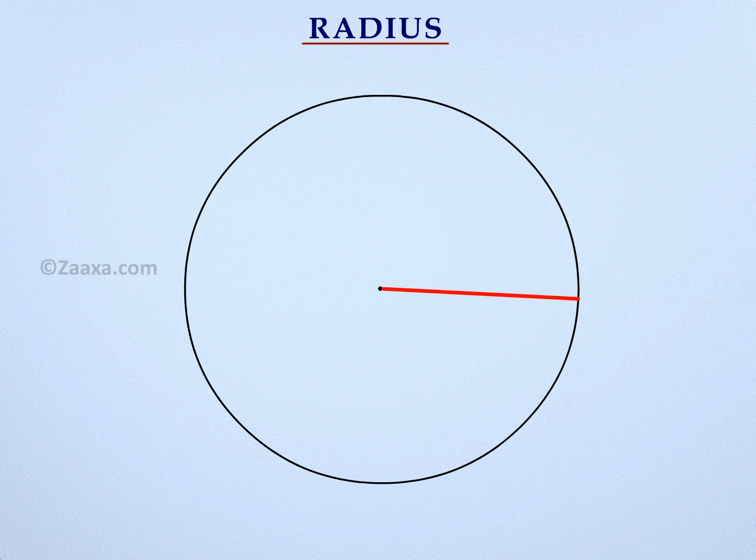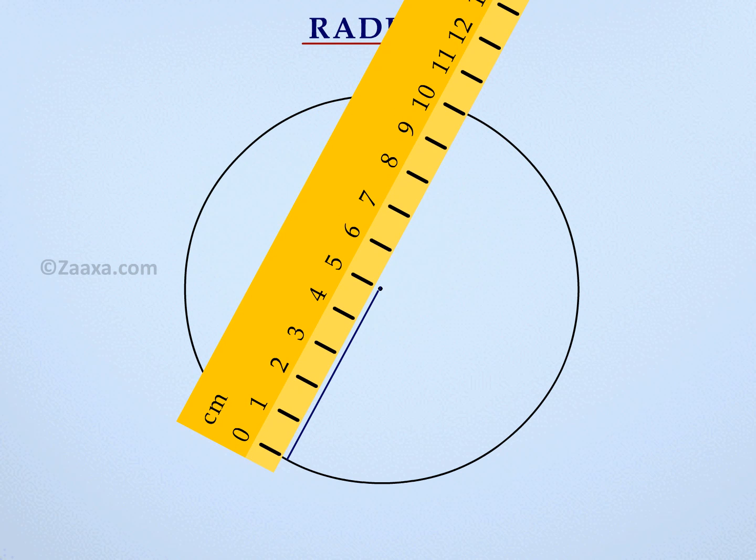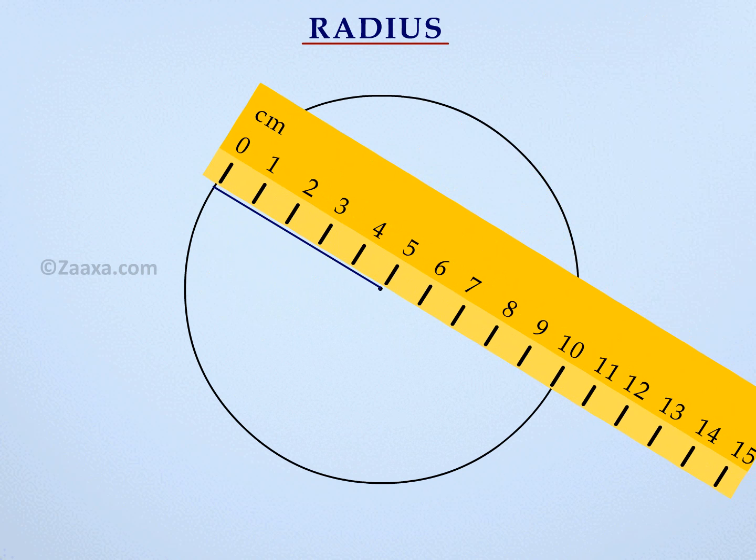If you measure the distance between the center of the circle and any point on the circle, you will notice it is exactly 5 cm.